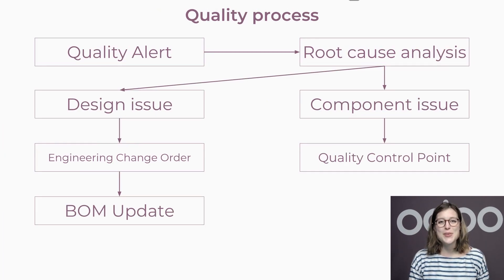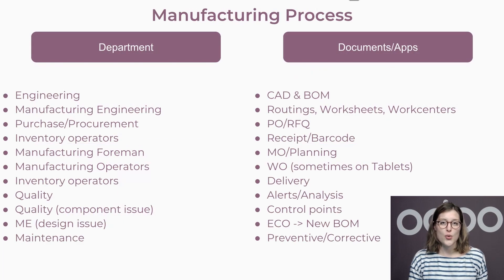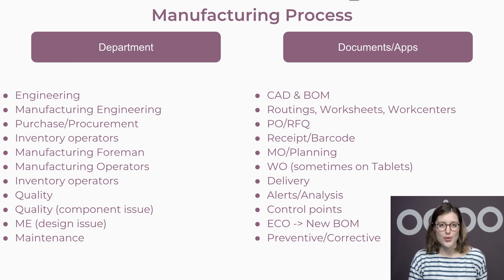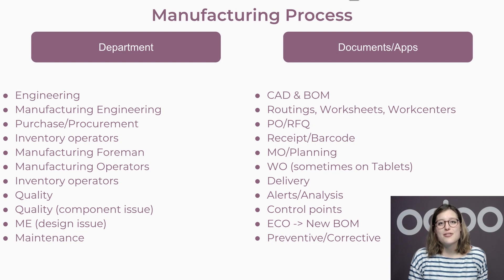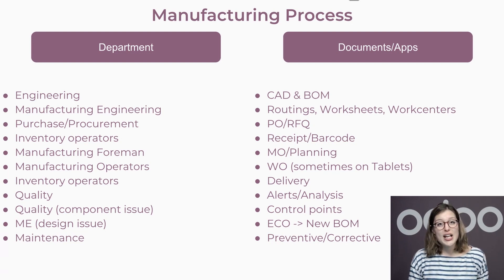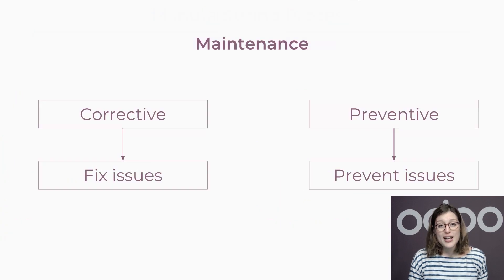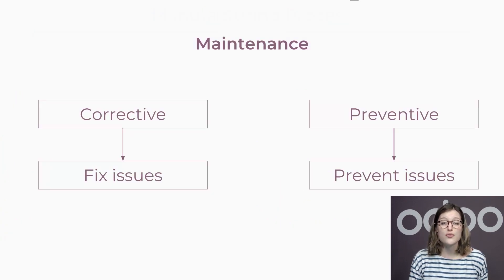The last thing we need is a maintenance program. There are two types of maintenance: corrective and preventative. With corrective maintenance, you'll fix an already existing issue — this means fixing what's broken. For preventative maintenance, an example would be if you notice that your equipment tends to fail after a certain number of uses. It's a good idea to do some maintenance before it breaks, which will prevent your production from being blocked.